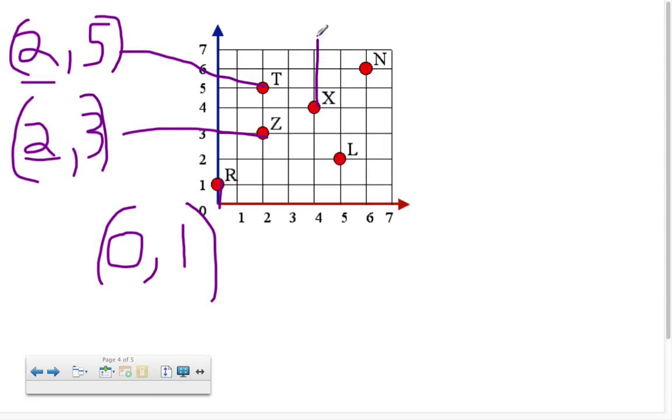Let's do X now. X you have to go over 4, four. Good job. And you have to go up what? Four. So over 4, up 4 is (4, 4).